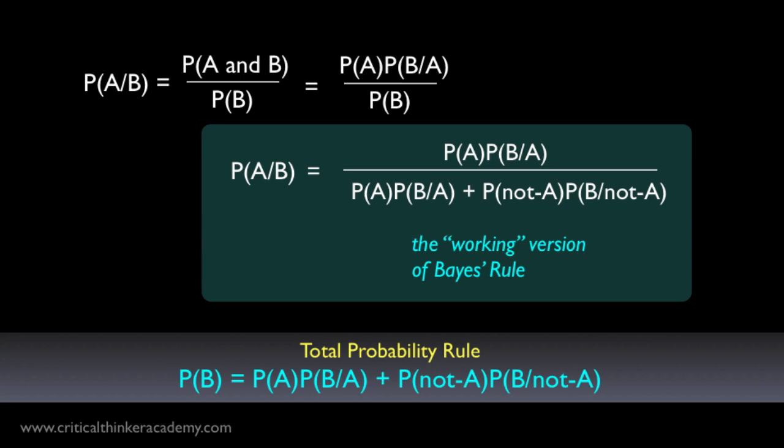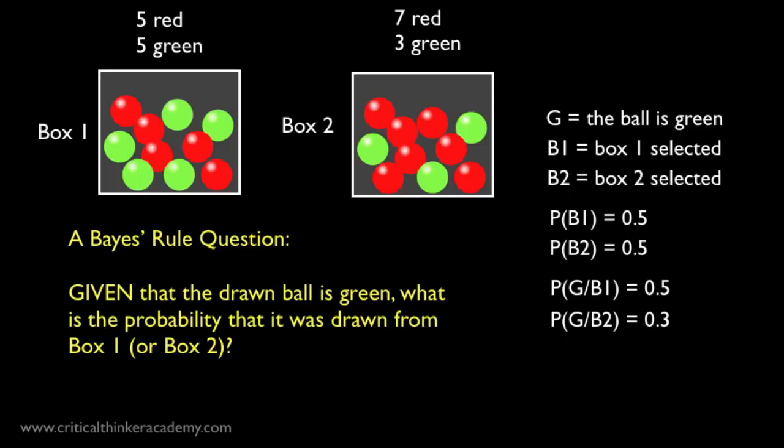Now let's look at the problem we left off with at the end of the last tutorial, and see how Bayes' Rule can be used to solve it. We're given two boxes, each with a different proportion of red and green balls in them. Box 1 has five red and five green balls, and box 2 has seven red and three green.